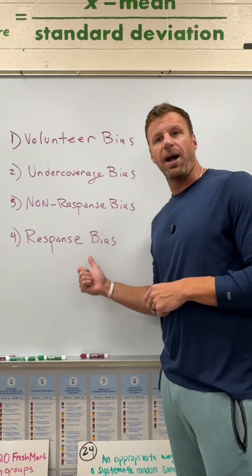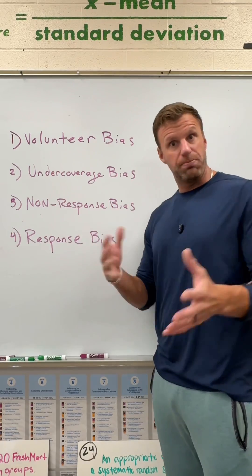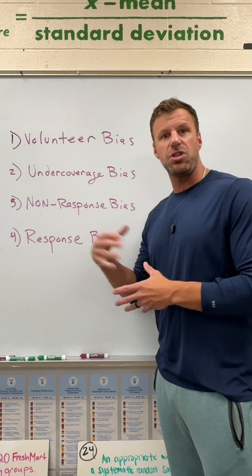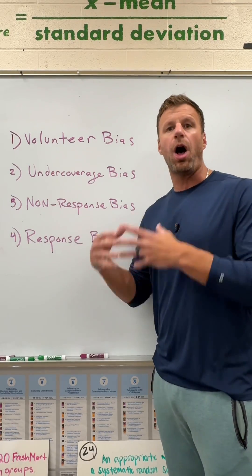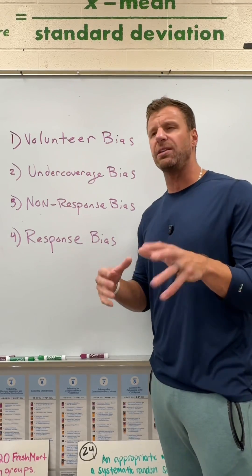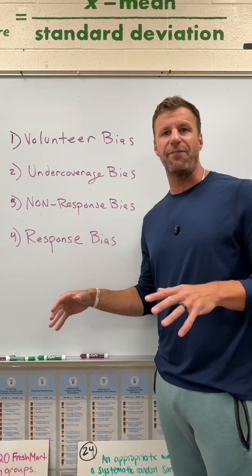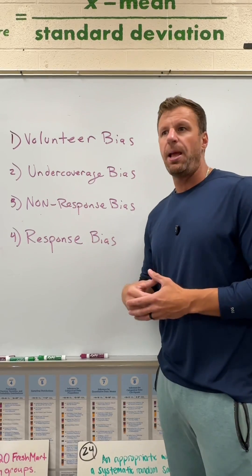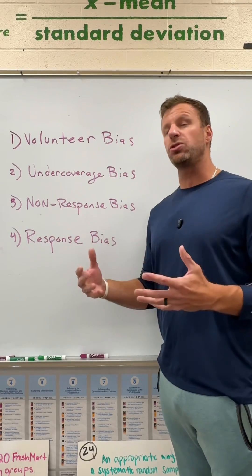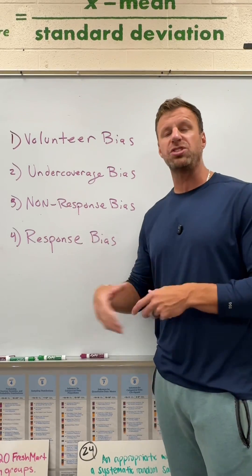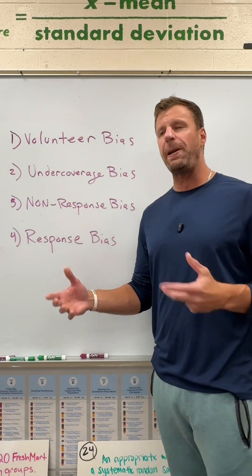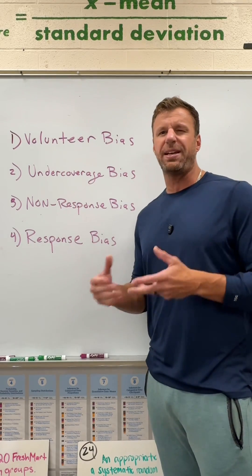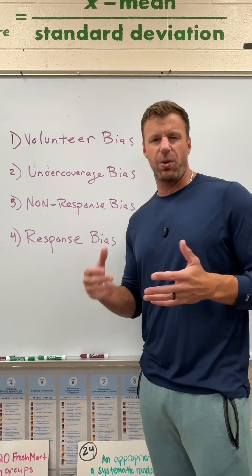Finally, we have response bias. This is when you might have a really nice sample, but the responses you get are untruthful — not necessarily a lie, just untruthful for whatever reason. This could be for lots of reasons. Maybe you have social desirability: you ask people a question in front of a bunch of other people, so they don't give you the full truth because they don't want to look bad in certain situations.